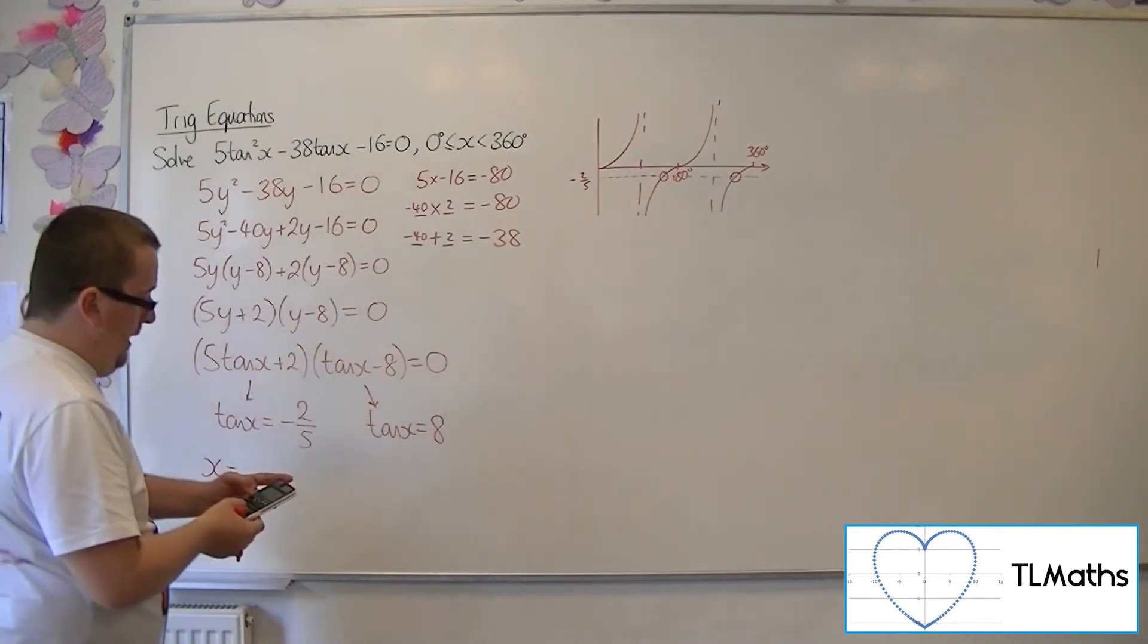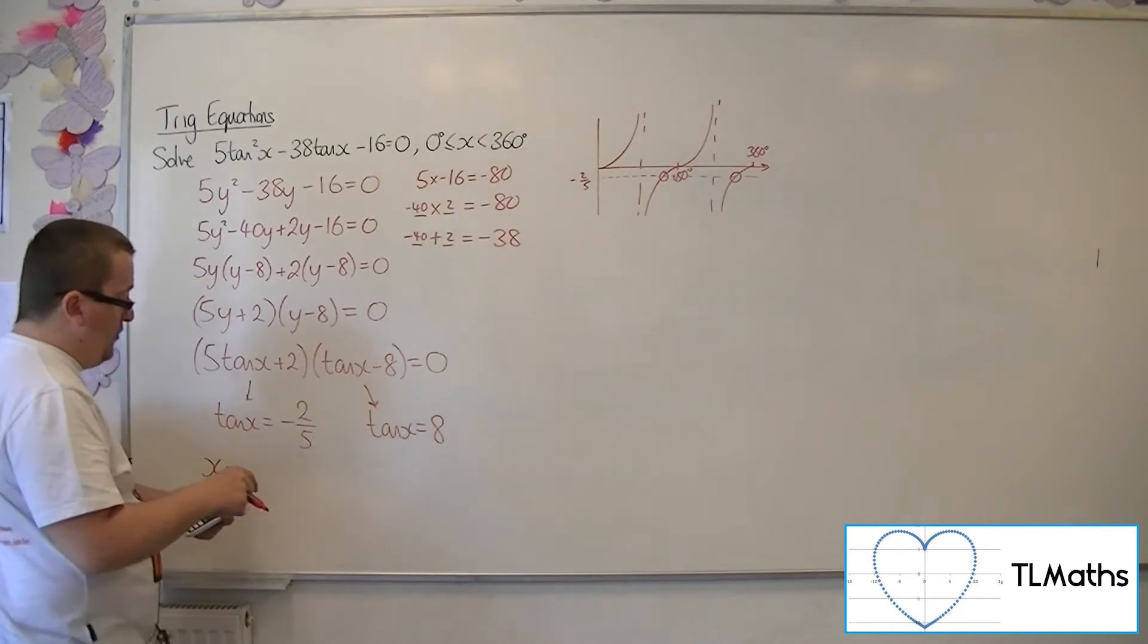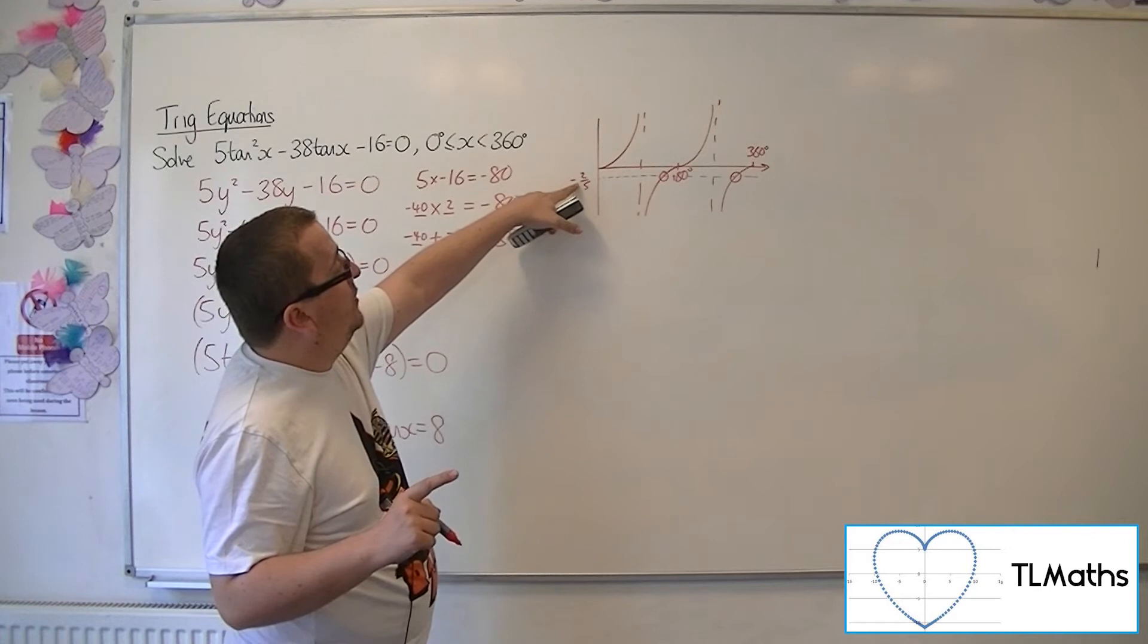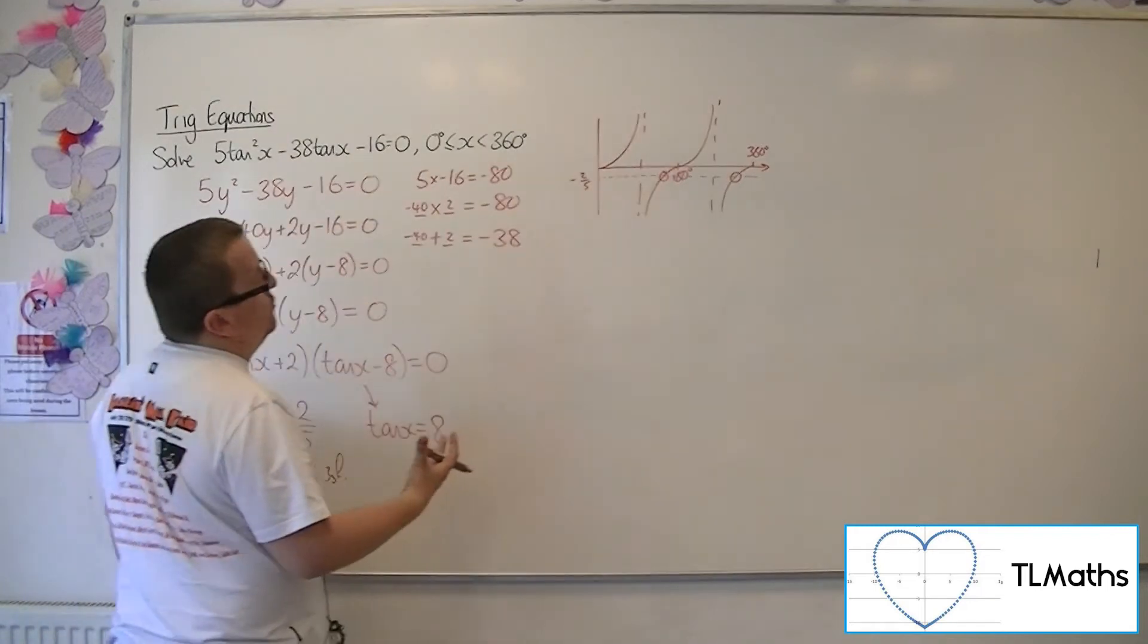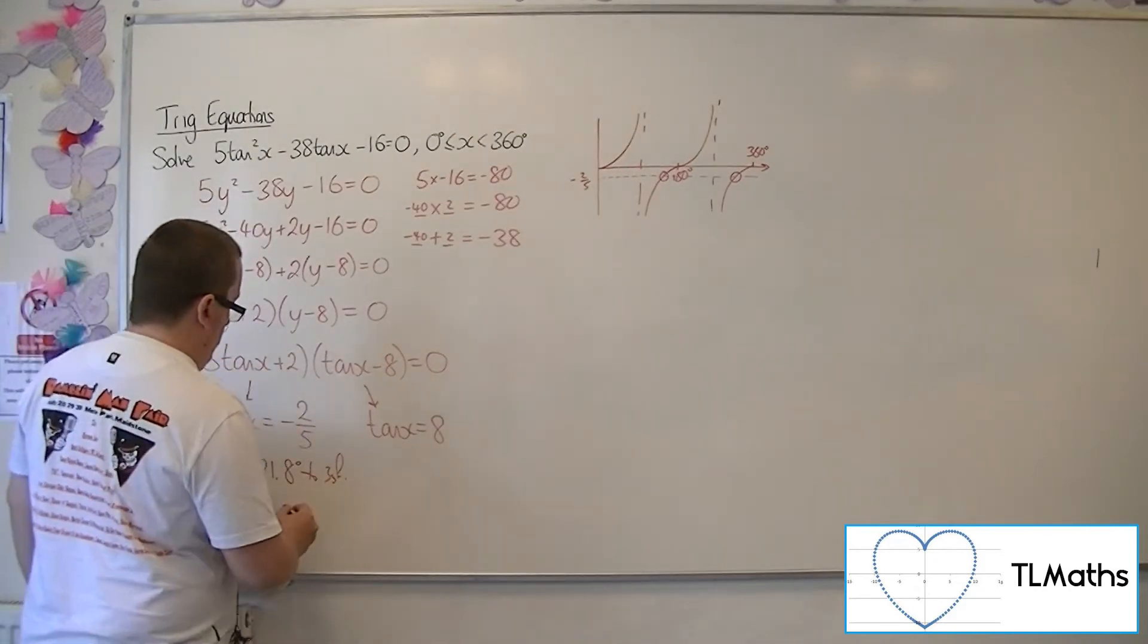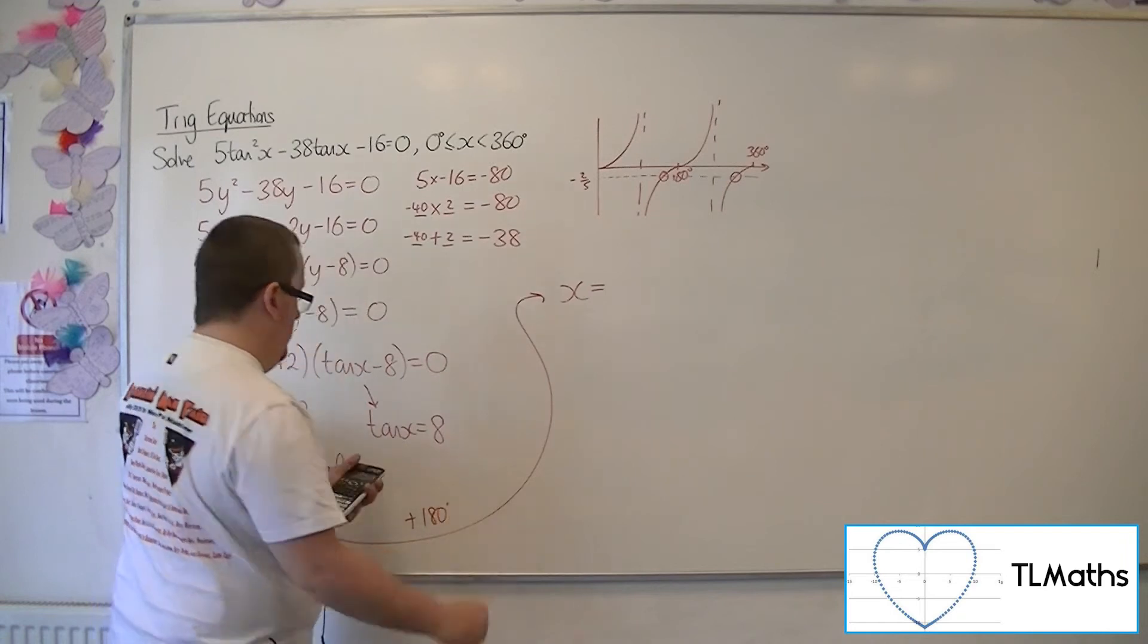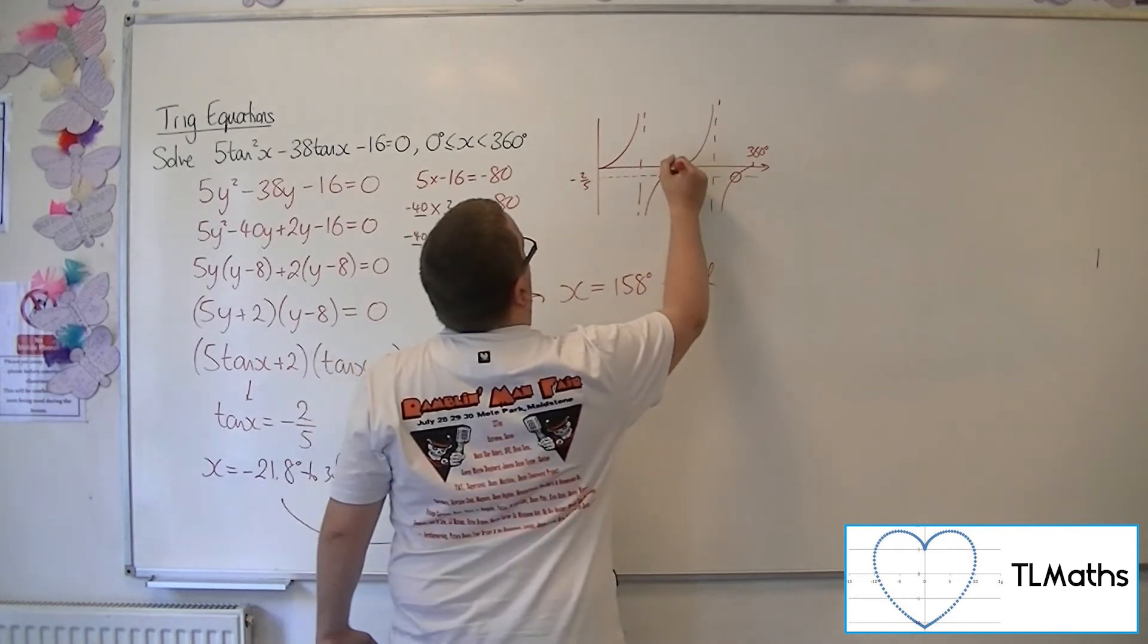Now, if I do inverse tan of minus 2 fifths, making sure your calculator is in degrees, I get minus 21.8 degrees to 3 sig fig. Now, clearly, that is not between 0 and 360. That's the solution that's going to be over to the left-hand side of the y-axis. So I can just add on 180, the period of tan, to get to the first one that I want. So I'm going to add on 180 to that, and it gets me 158 to 3 sig fig. So that's 158.